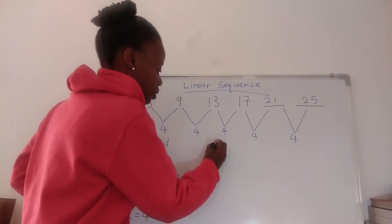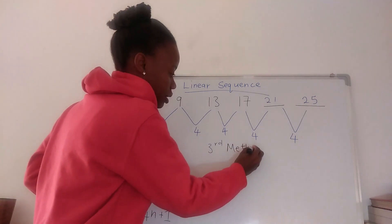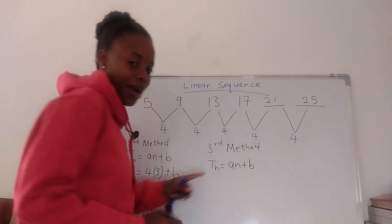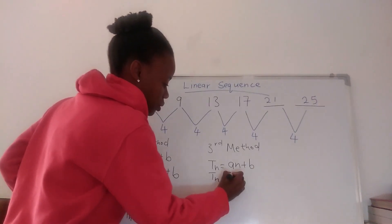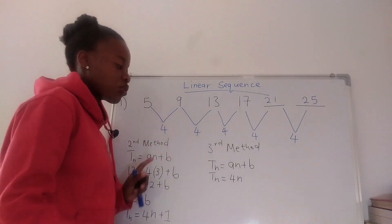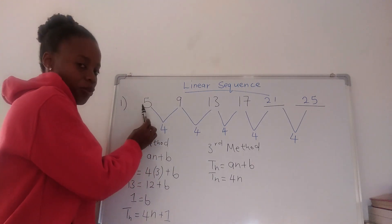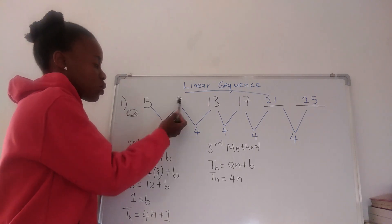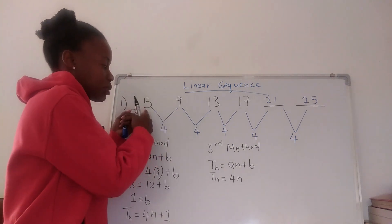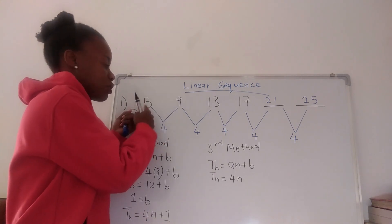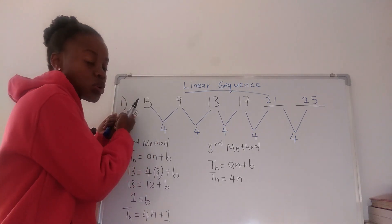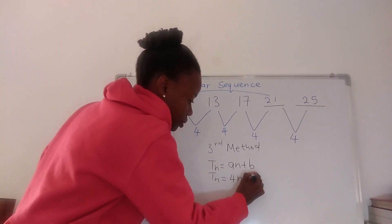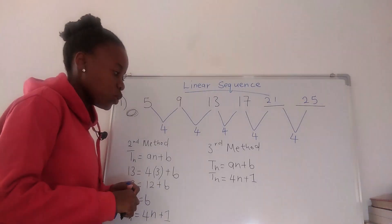The third method: Tn equals an plus b, where a is the difference, so Tn = 4n. To find b, look for the term before the first term. Since we subtract 4 each step going back, 5 minus 4 equals 1. So the term before the first term is 1, giving us Tn = 4n + 1. All three methods give the same answer.